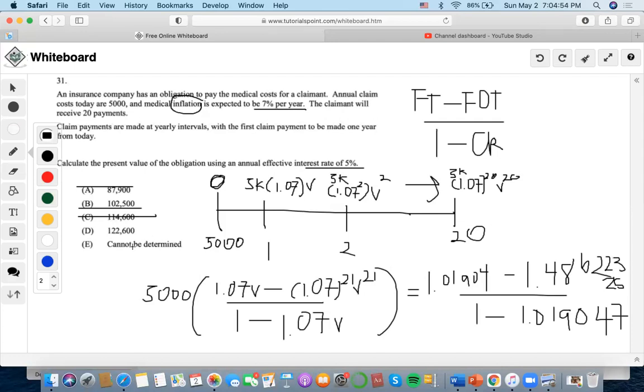Even though the answer that we got isn't exactly 122,600, or even really close to that, that doesn't mean that the answer cannot be determined, because we already have the answer. So, we are going to choose D as the answer.